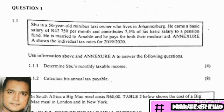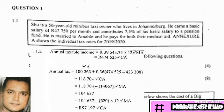Question 1.1.2 asks us to calculate his annual tax payable. Notice the word 'annual,' so we need to convert to an annual figure. We take the monthly taxable income from 1.1.1 and multiply by 12: 39,543.75 × 12 = R474,525. This is the annual taxable income, but the question asks for annual tax payable, so we need to continue further.